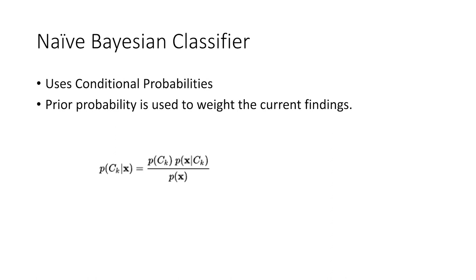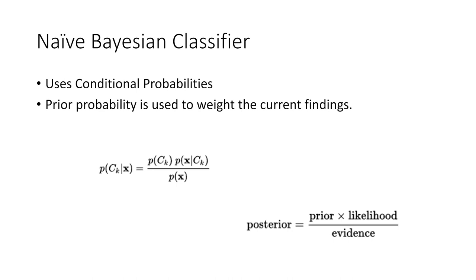Here's the formula for naive Bayesian: what's the probability of C of K given X, knowing X to be true? The best way to remember it: the posterior probability equals the prior probability times the likelihood ratio over the evidence — a nice, easy way to remember the power of naive Bayes.